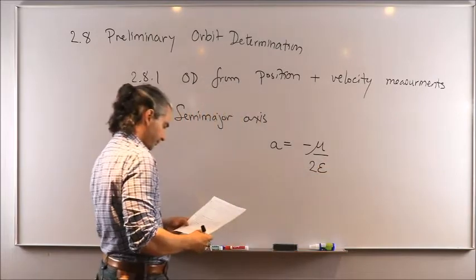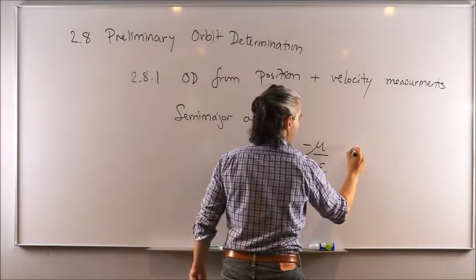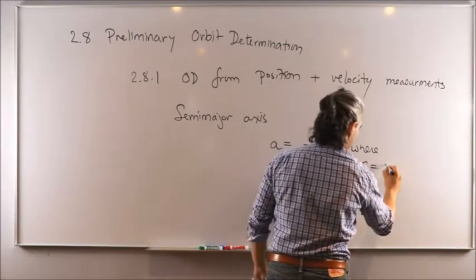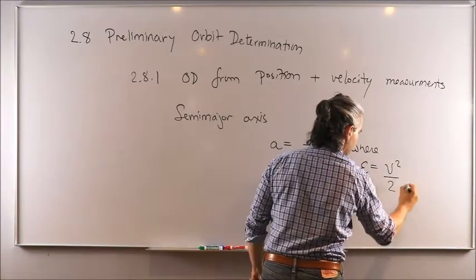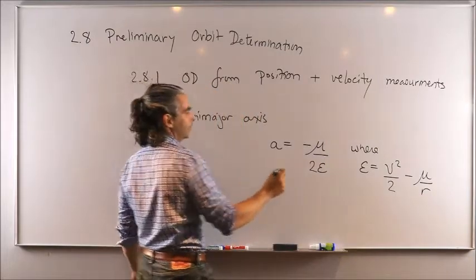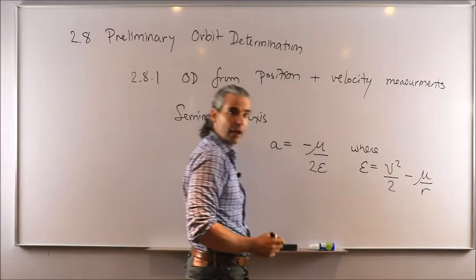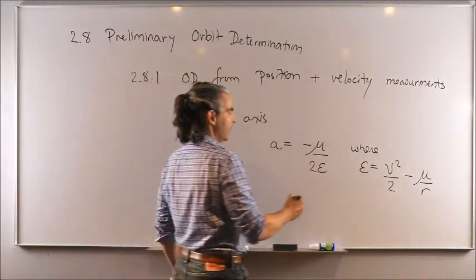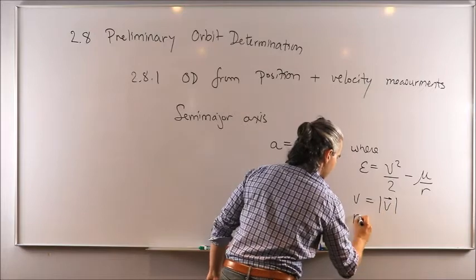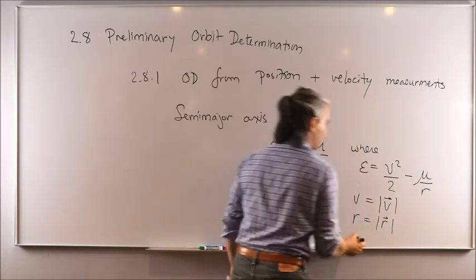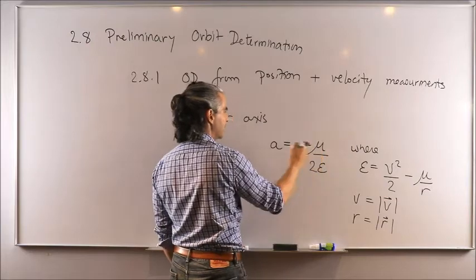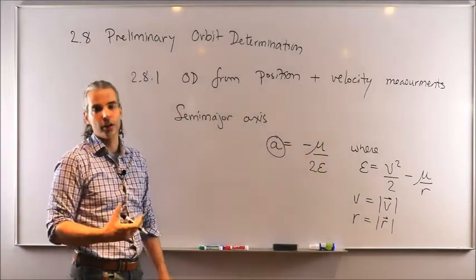The orbital energy is specific kinetic energy v-squared over two, plus specific potential energy negative mu over r. That's convenient because we're given the velocity vector and position vector as inputs. All we have to do is calculate the norms of those two vectors, plug into the orbital energy equation, and then into the semi-major axis formula. That gives us our first orbital element.